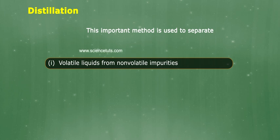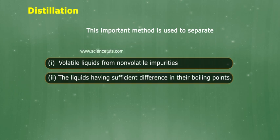Distillation. This important method is used to separate: 1. Volatile liquids from non-volatile impurities and 2. The liquids having sufficient difference in their boiling points.